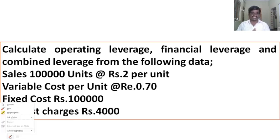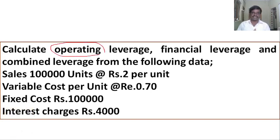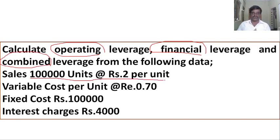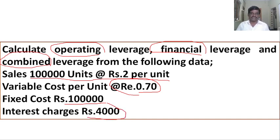The problem asks us to calculate operating leverage, financial leverage, and combined leverage. One lakh units are sold at rupees two per unit. Variable cost per unit is 70 paisa. Fixed cost is rupees one lakh, and interest charges — meaning interest on loan — are rupees four thousand. Now let's see how to solve this problem.